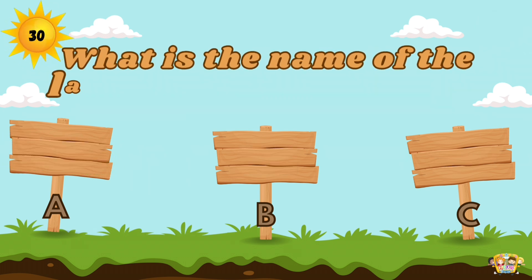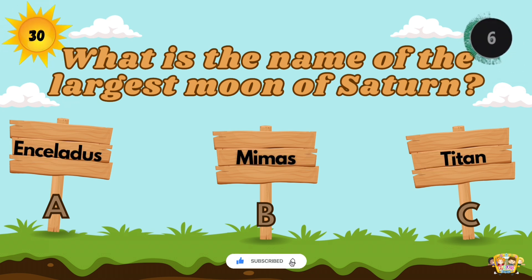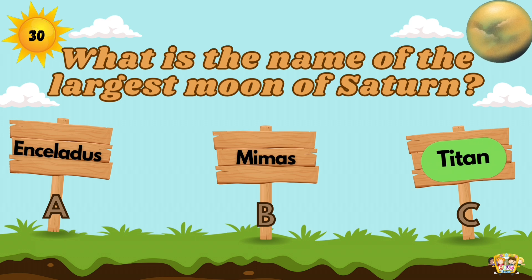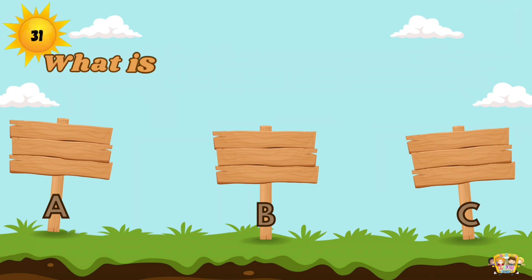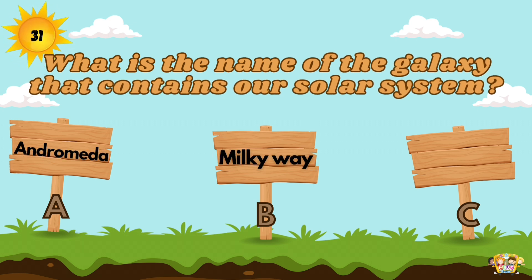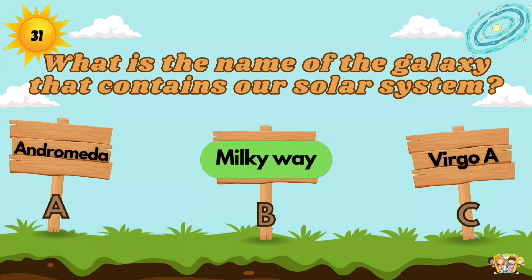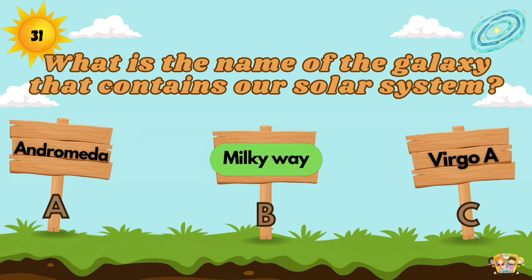What is the name of the largest moon of Saturn? The largest of Saturn's moons and the first to be discovered is Titan. What is the name of the galaxy that contains our solar system? The Milky Way is the galaxy that includes the solar system.